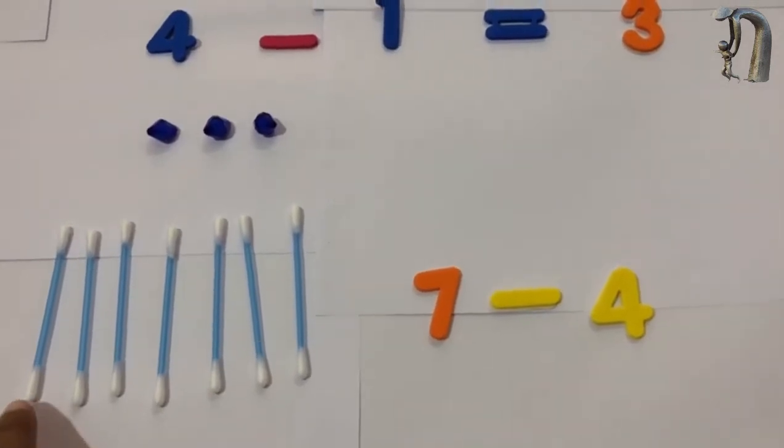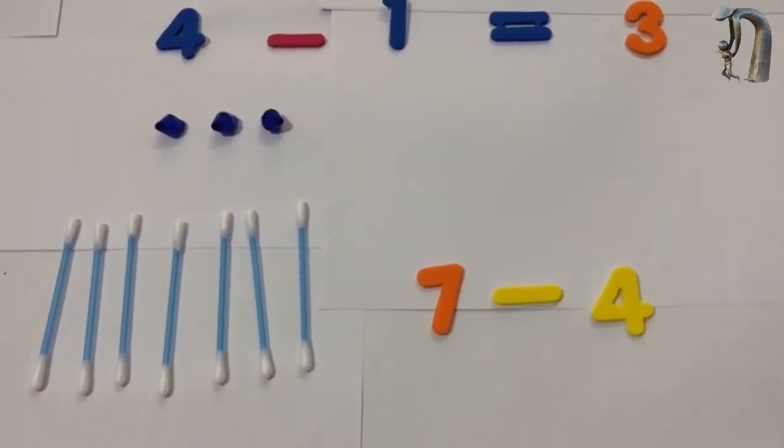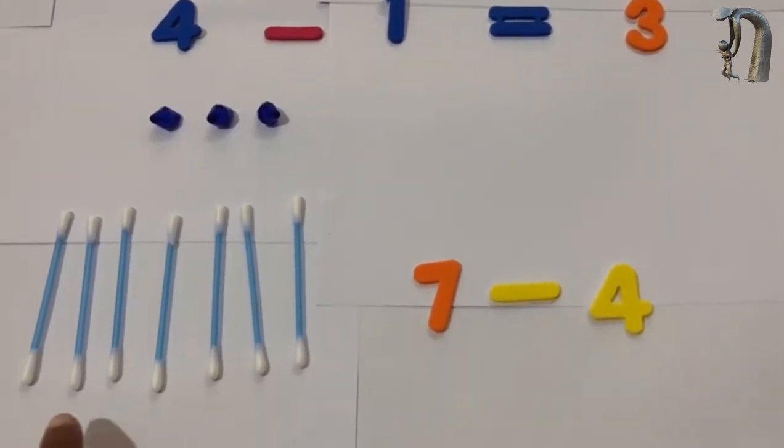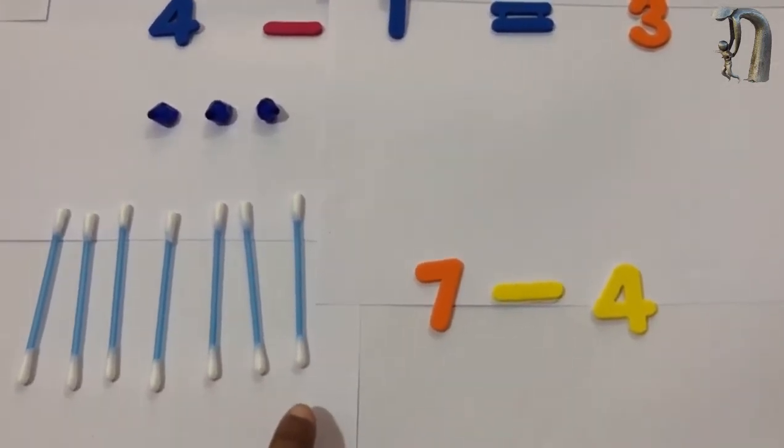Now take another example. Here we have earbuds. You can talk about hygiene to the child. You can talk about numbers to the child. Ask the child to count the number of earbuds here.